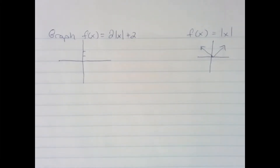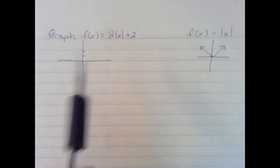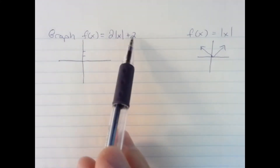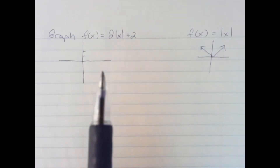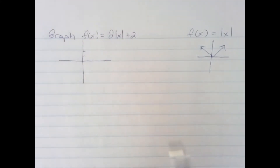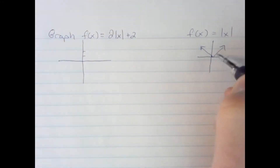Here we're going to graph 2 times the absolute value of x plus 2 and show the transformation. The parent graph is approximately this — just the absolute value of x.